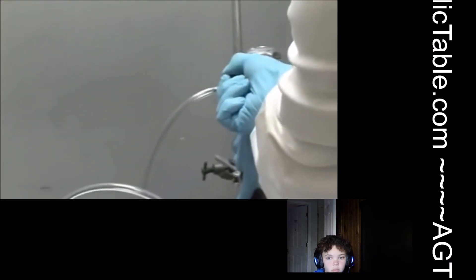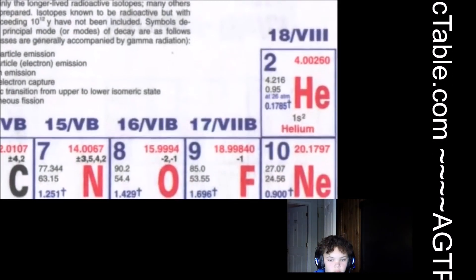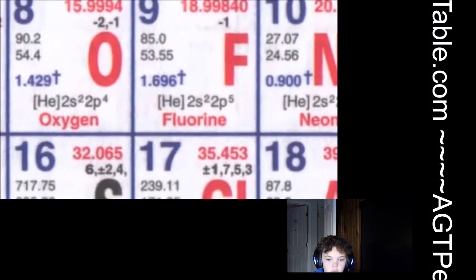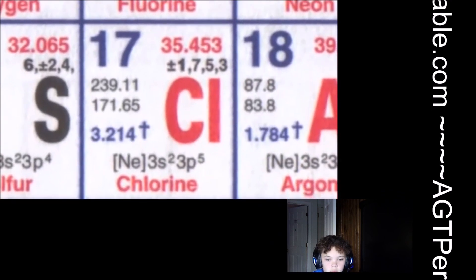Chlorine sits in the right hand side of the periodic table, the halogens in group 7, some people say 17. Really what that says is that Chlorine wants another electron to get that noble gas configuration and it will move heaven and earth to get that electron.